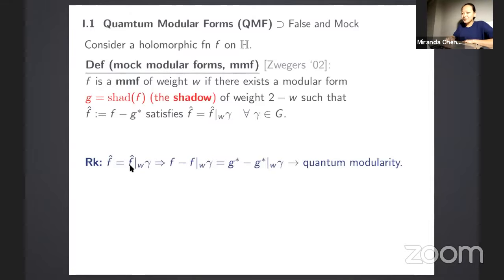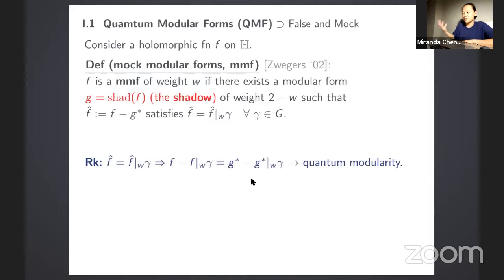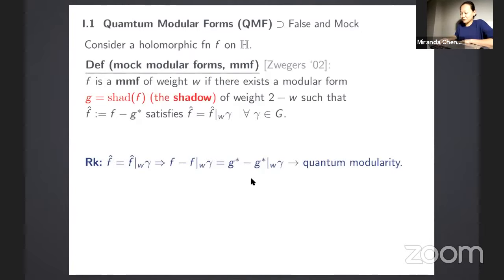It's easy to see why mock modular forms lead to quantum modular forms: since the completion — the difference of the two — behaves like a modular form, the modular difference of the mock modular form f is the same as the modular difference of the non-holomorphic Eichler integral. This modular difference is given by a period integral with manifest analyticity in tau, hence satisfying the definition of quantum modular forms.